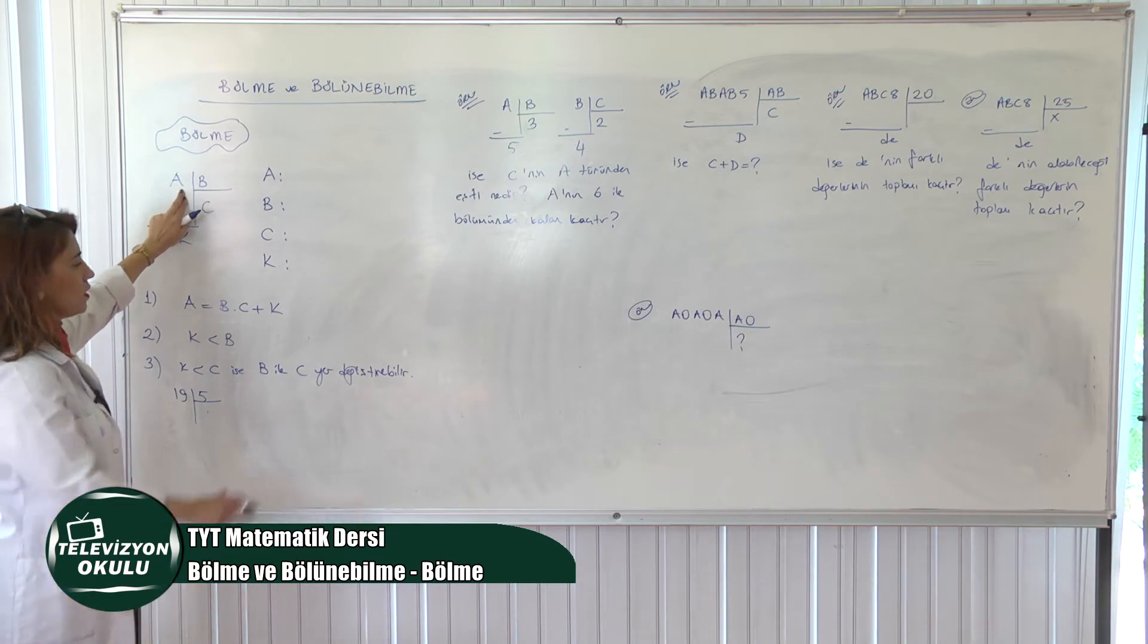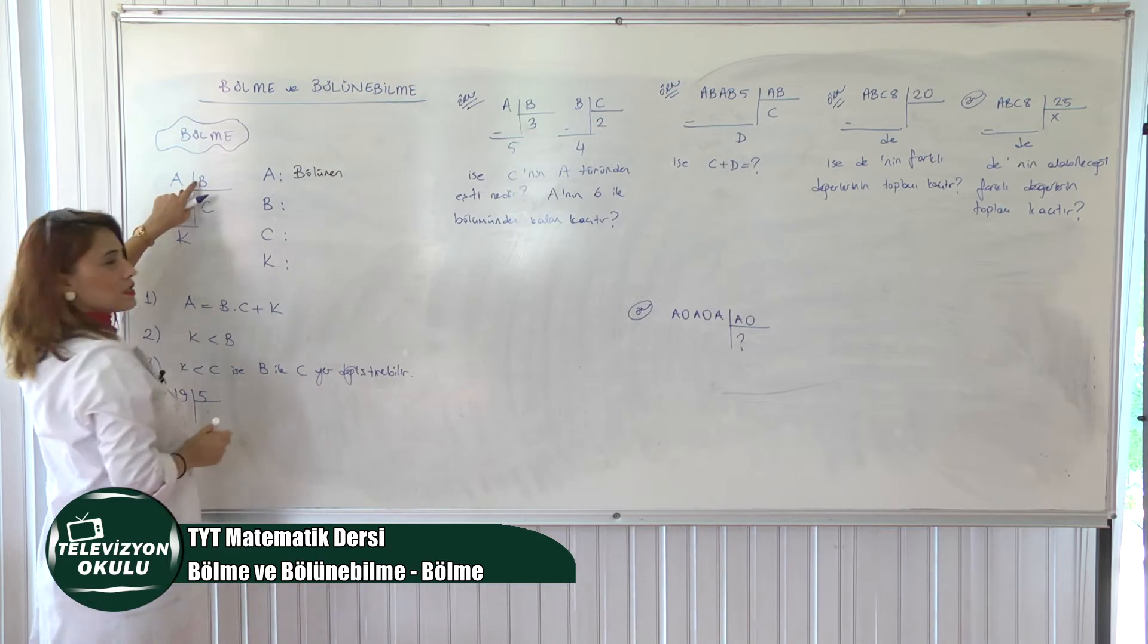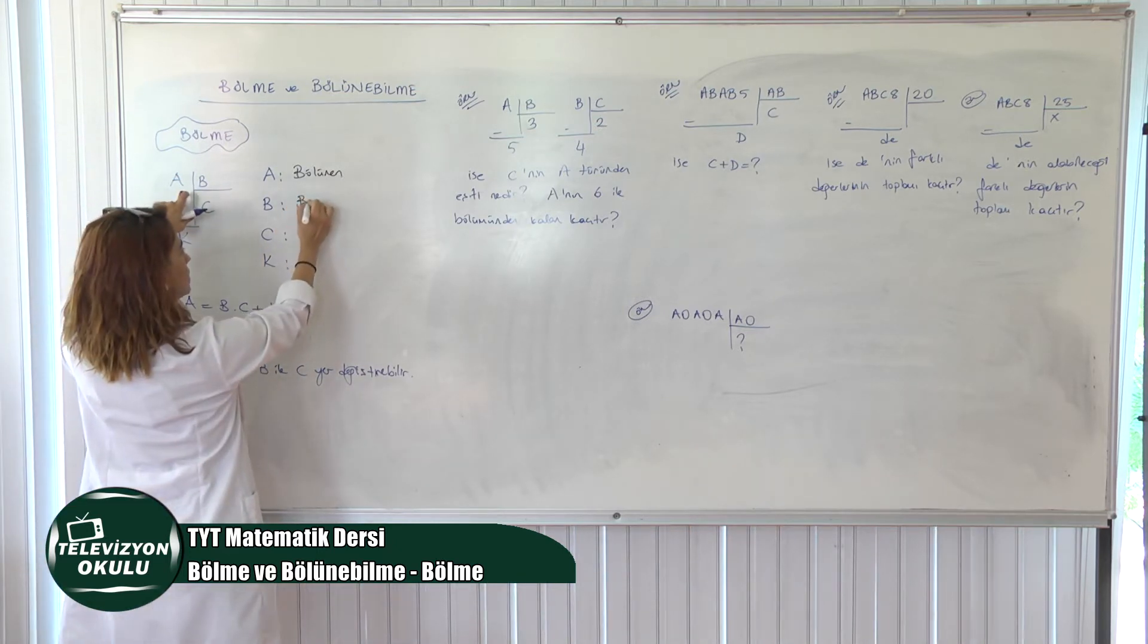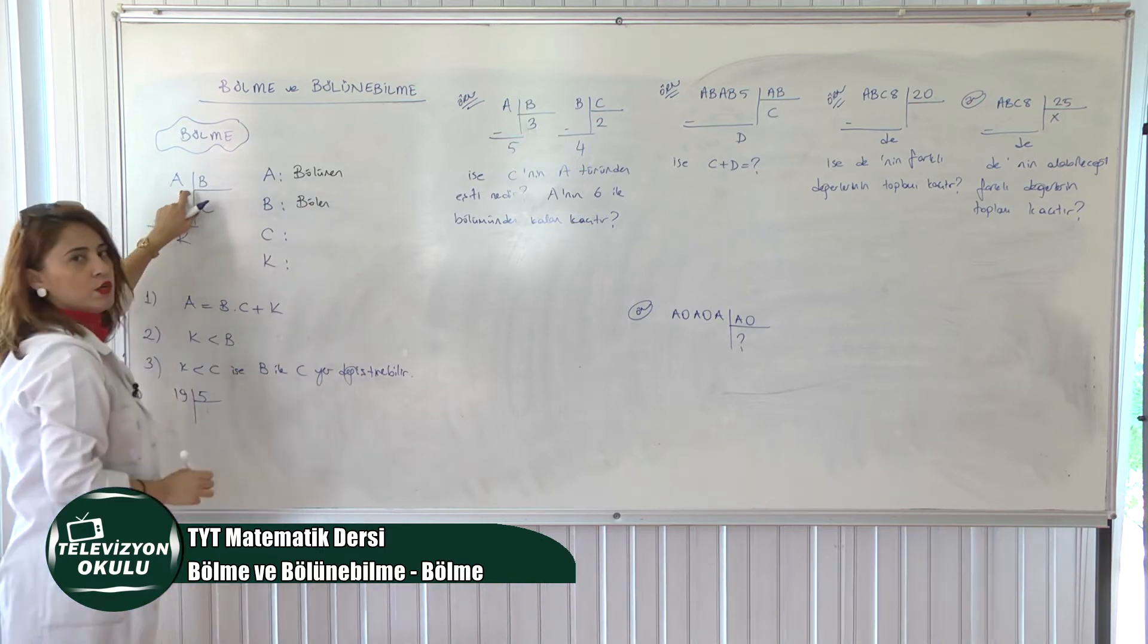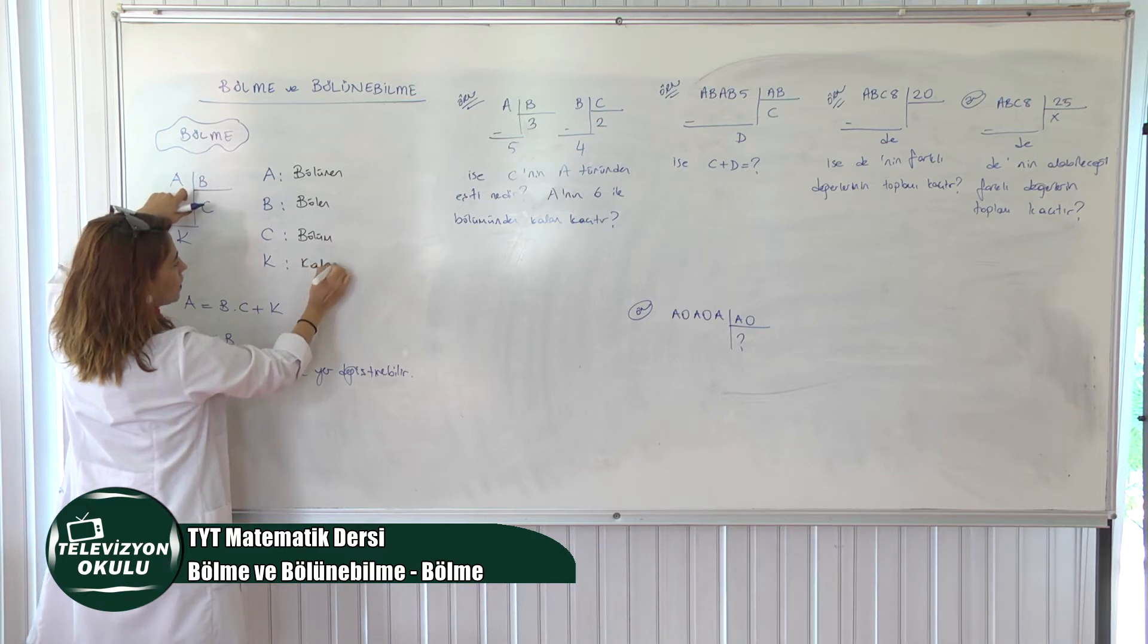A sayısı bölünendi değil mi? Bölünen. Bölünüyor. B sayısı A'yı ne yapıyor? Bölüyor. Yani bölen. C sayısı bölüm. K sayısı da kalandı arkadaşlar.